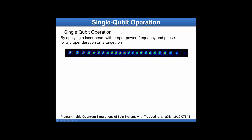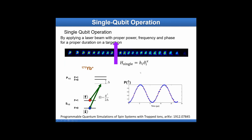Once we can initialize and detect, we need to do single qubit operations, corresponding to the NOT gate in classical computers — flipping zero to one and one to zero. But in quantum systems we have the capability of superposition, described as a rotation on the Bloch sphere. We achieve this by applying a well-defined laser with proper frequency and phase to any qubit we want to operate on.